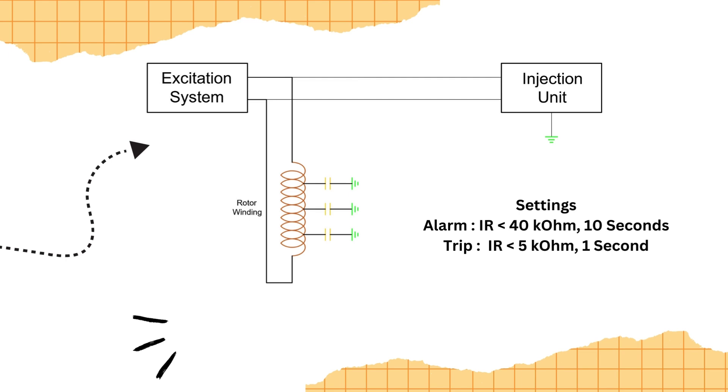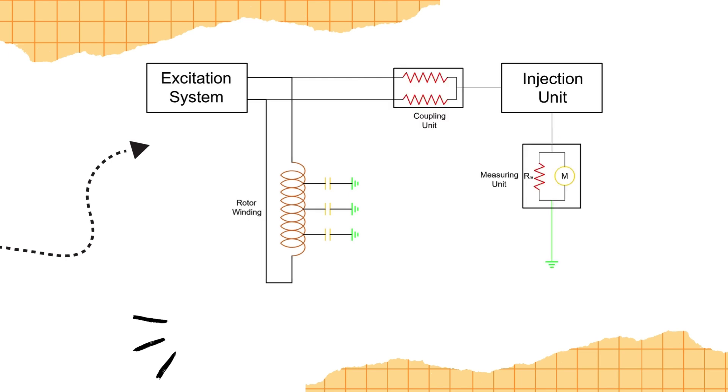But how does the injection unit measure this resistance? Inside, it houses two additional units, the coupling unit and the measuring unit. The coupling unit is equipped with two high resistances to block any DC voltage from the excitation system, which could otherwise damage the unit.